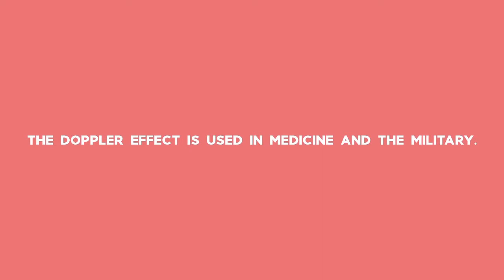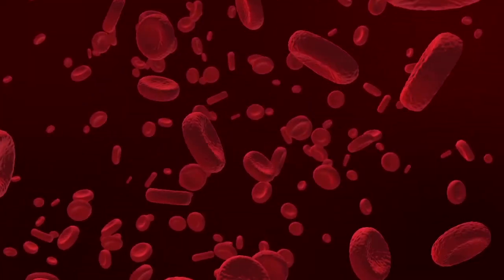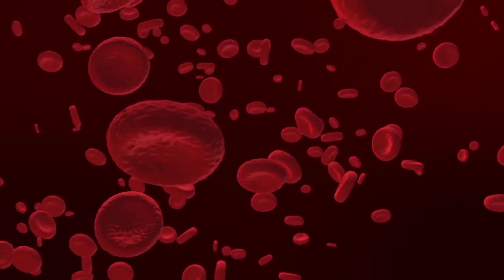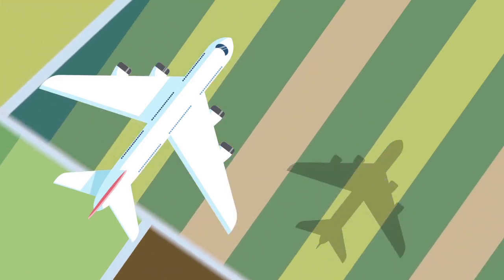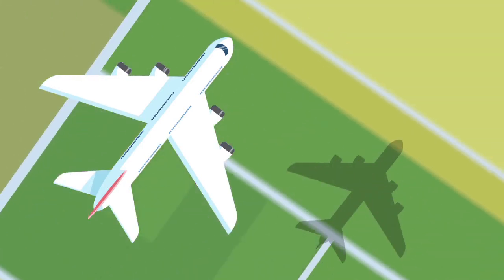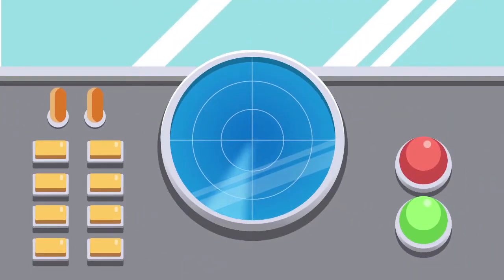The Doppler effect is used in medicine and the military. It is used to tell how fast blood cells are moving. It can even be used to tell aircraft where they are and help keep them safe. Air traffic controllers use the Doppler effect to find out where and how fast airplanes are moving. Pretty important stuff.